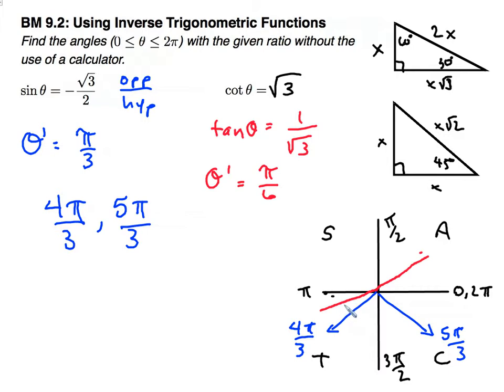And so here we have finding our reference angle of pi over 6. So our first angle is in fact pi over 6.